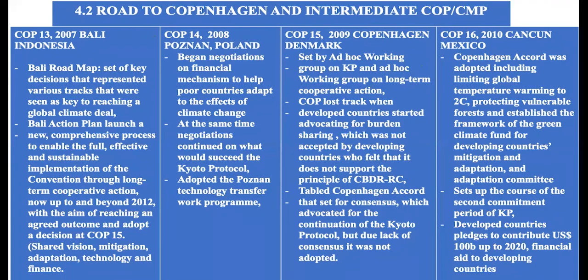Then the conference went on to Cancun, Mexico in 2010 — COP16. In Cancun, the Copenhagen Accord was adopted. The Cancun Agreements included the climate goal of limiting temperature increase to below two degrees Celsius, while pursuing efforts to limit the increase to 1.5 degrees. The conference also adopted decisions to protect vulnerable forests and establish the Green Climate Fund for mitigation and adaptation.